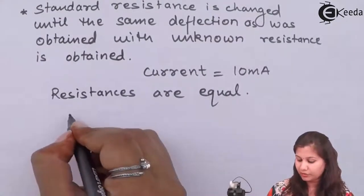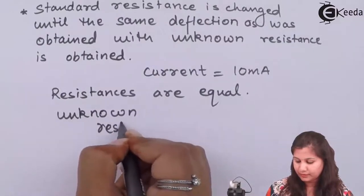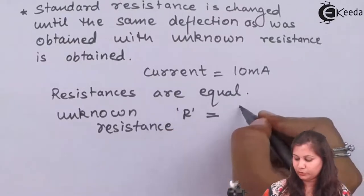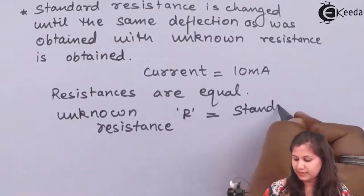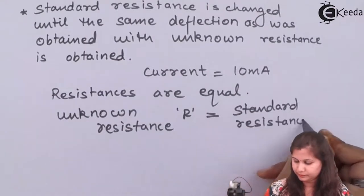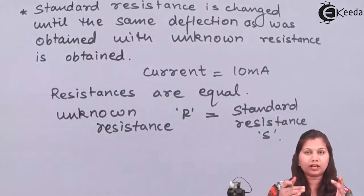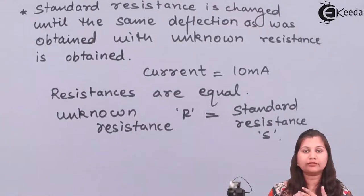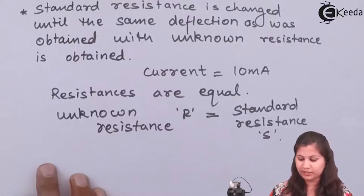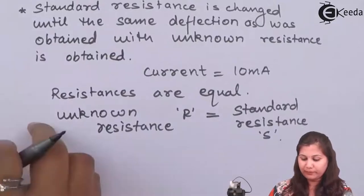This means that the unknown resistance R is equal to the standard resistance S. So we are substituting the unknown resistance with the standard resistance, and through that substitution we are measuring the value of the unknown resistance. This was the substitution method.